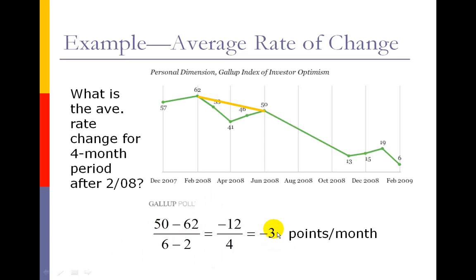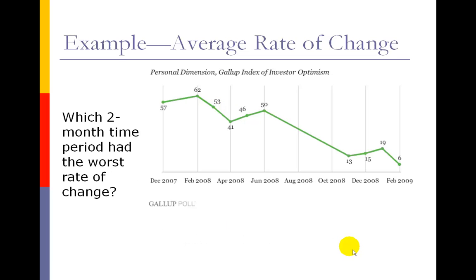In this case we have a decreasing line, so our slope here is a negative 3, points per month again, so investor optimism is going down, decreasing.